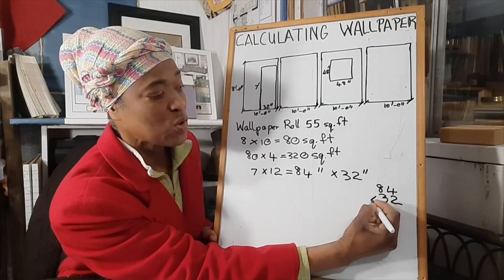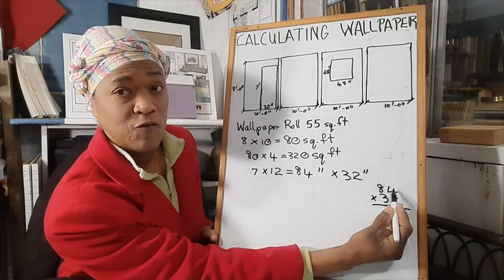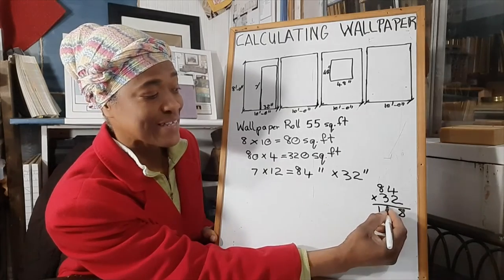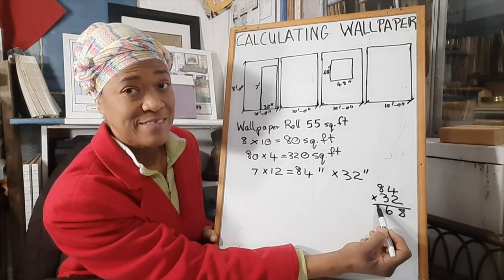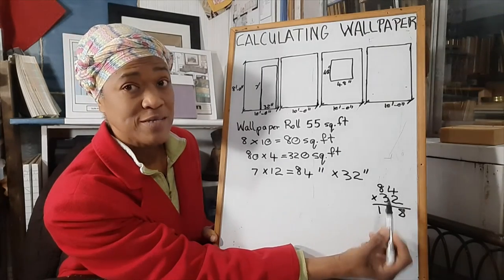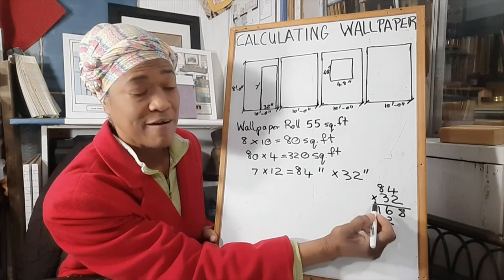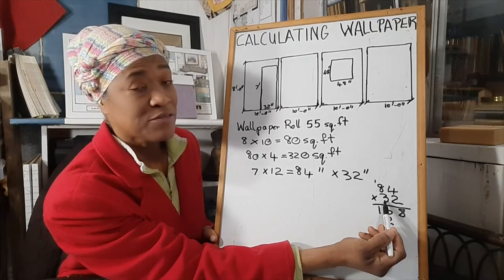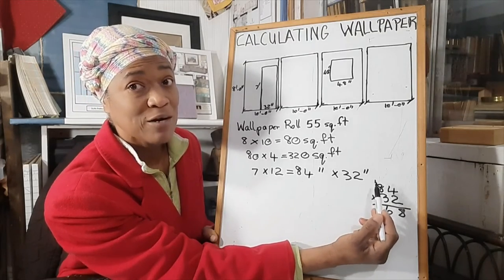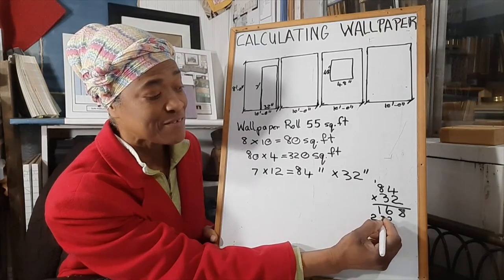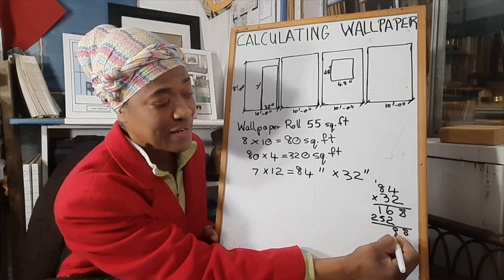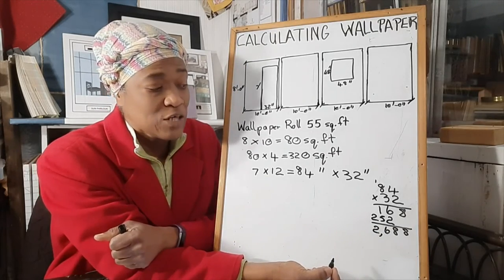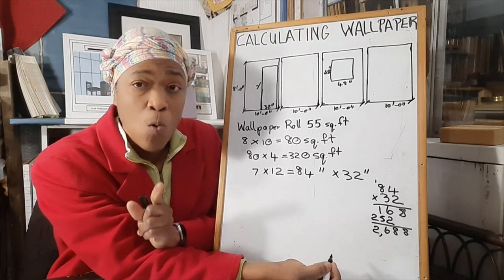Now we have 84 inches. We multiply 84 by 32 inches. Working through the multiplication: 84 times 32 equals 2,688 square inches. That's the area of the doorway in square inches.